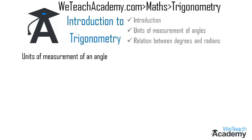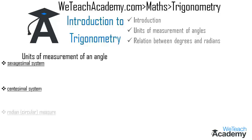For the measurement of angles there are three known systems: the sexagesimal system, also known as the English system, the centisimal system, and the radian or circular measure.